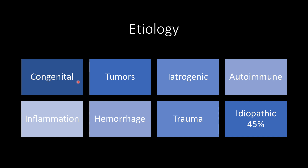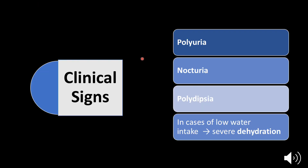In no particular order, these are the various mechanisms by which we can have insufficient ADH production. Congenital disorders are genetic defects in hormone production. Tumors such as adenoma or meningioma can cause pressure in the hypothalamus-pituitary region. Iatrogenic causes include damage to the hypothalamus or pituitary gland during surgery. Autoimmune causes involve destruction of the hormone-producing nuclei. We also have inflammation, hemorrhage, and trauma. In 45% of cases, central diabetes insipidus is simply idiopathic — there is no identifiable cause.